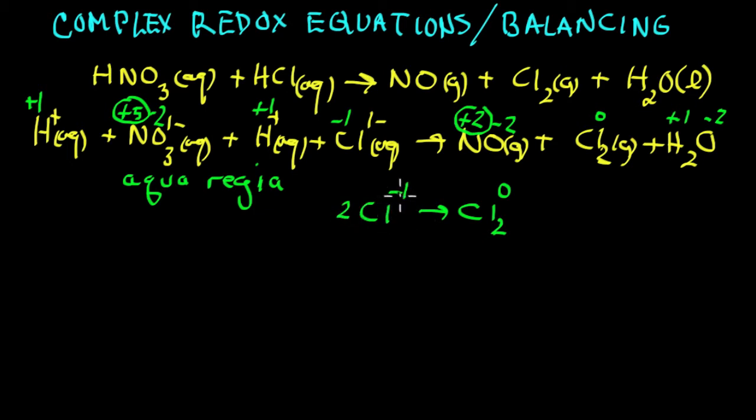And notice we have two atoms with an excess of one electron becoming zero. So each one essentially undergoes oxidation, loses two electrons.